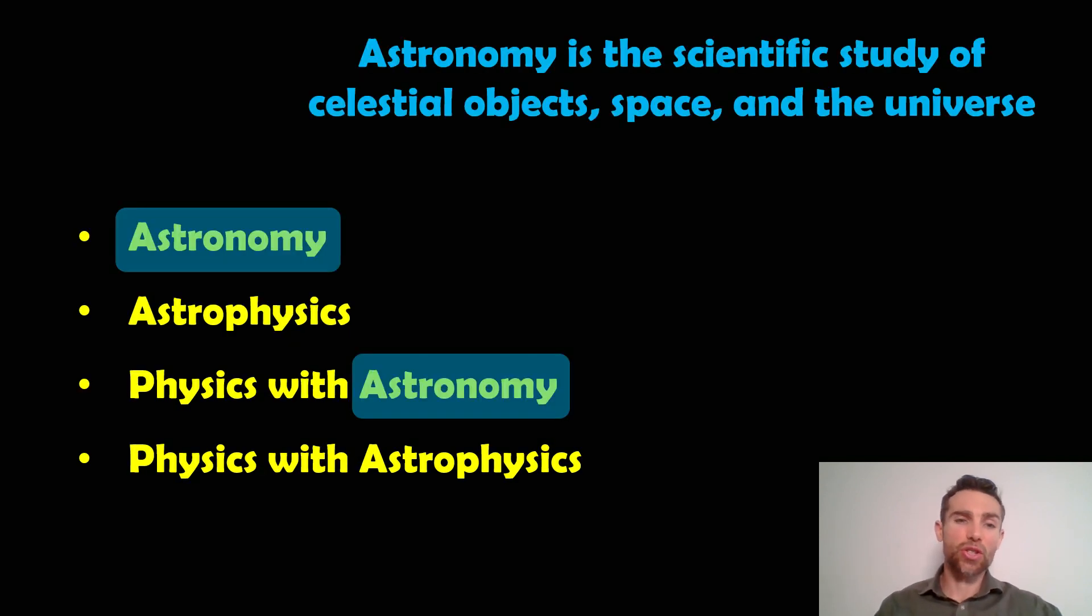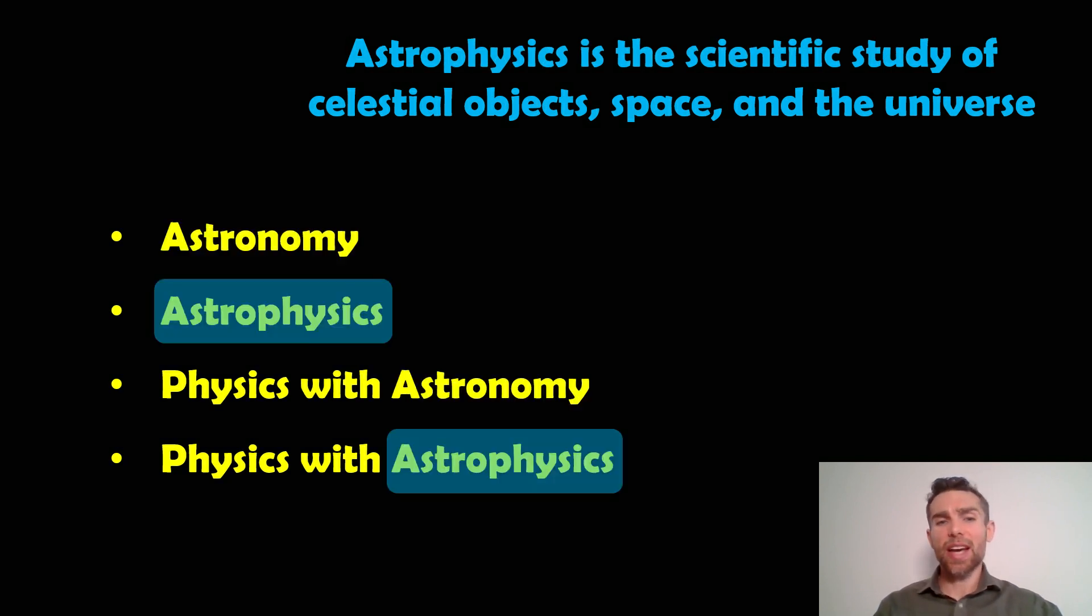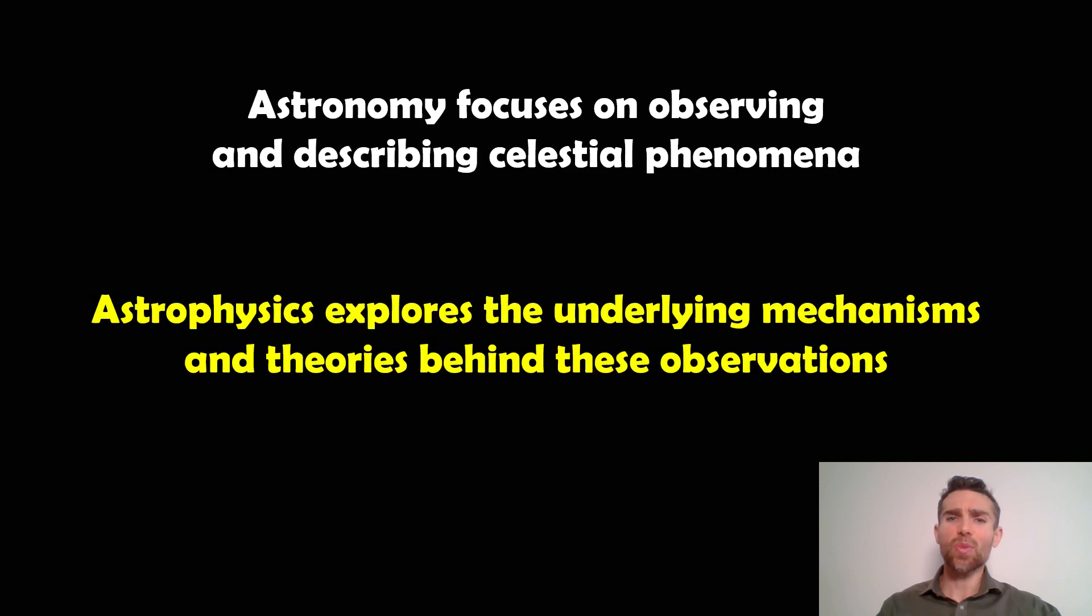Now, the astronomy part, this is actually the scientific study of celestial objects, space as well, and the universe. And if we go to astrophysics, astrophysics is the scientific study of celestial objects, space, and the universe. So very broadly, they're kind of the same thing. They're looking at astrophysical objects, they're looking at space in general and also the universe. So what is the actual real difference then between the two?